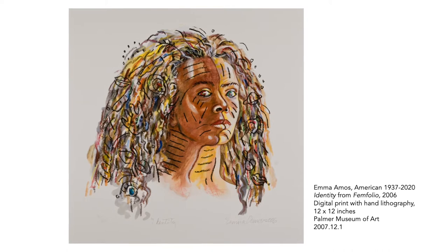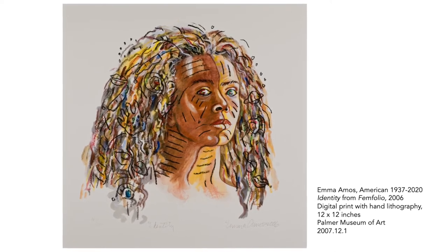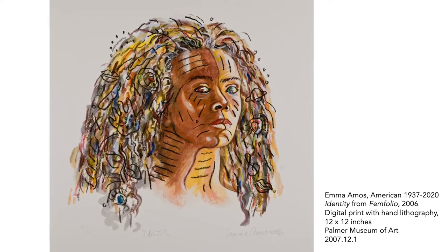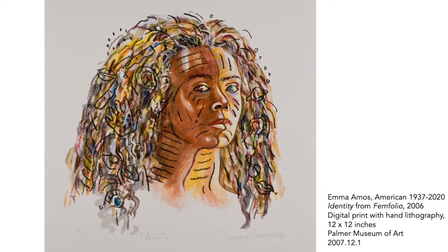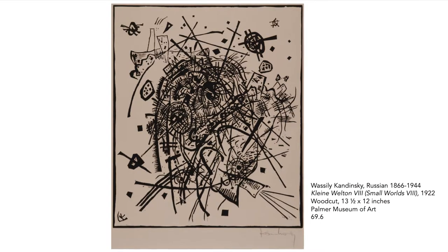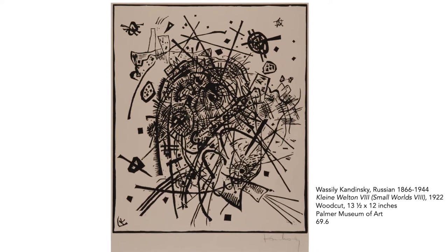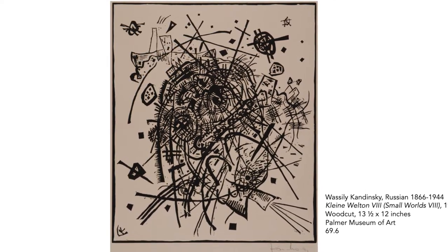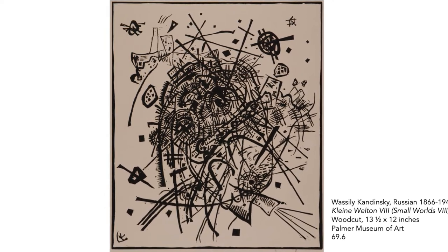Emma Amos' self-portrait uses lines to express her inner thoughts, but in a different way. She uses multicolored lines to define the spirals of her curly hair and black lines to create symbols like a hand, a planet, and a treble clef. Amos also draws a line down the middle of her face, defining her multifaceted identity as a multiracial woman. This work shows how powerful lines can be as not only compositional but also conceptual elements. This last work by Wassily Kandinsky is totally made up of bold, expressive lines. This work isn't about depicting a scene, but rather conveying a feeling through the movement, gesture, and interaction of lines.